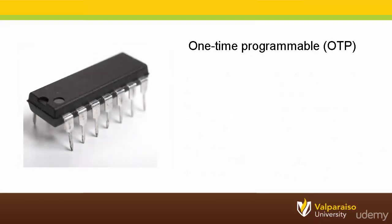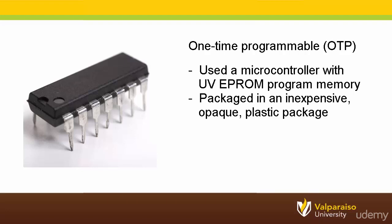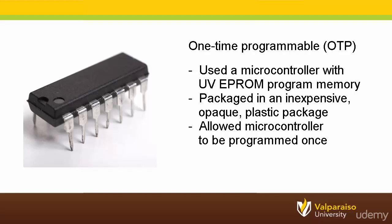Engineers, however, quickly innovated a new way to use EEPROM memory. Instead of using the more expensive ceramic package, a microcontroller with an EEPROM program memory could be mounted inside of a traditional, opaque, significantly less expensive plastic package. This allowed companies to purchase unprogrammed microcontrollers at a cost only slightly more expensive than the masked ROM microcontrollers and program them at the time of assembly right into their embedded system. The only disadvantage was that since the plastic packages were opaque, companies lost the ability to erase and reprogram the microcontrollers. In most cases this was considered acceptable, and one-time programmable or OTP program memories quickly became quite popular.